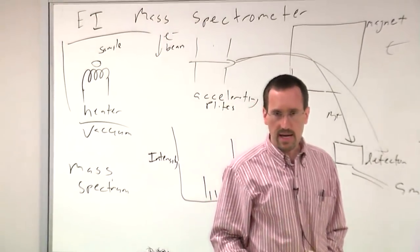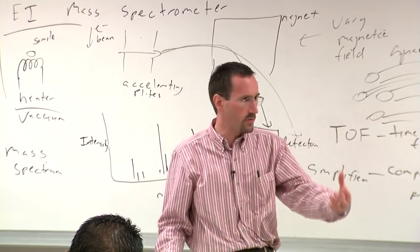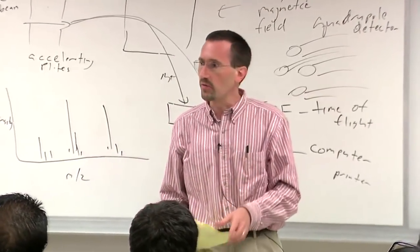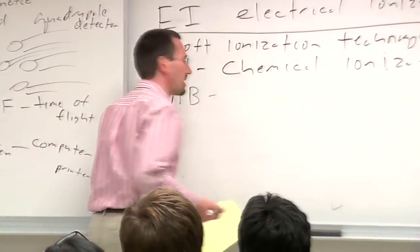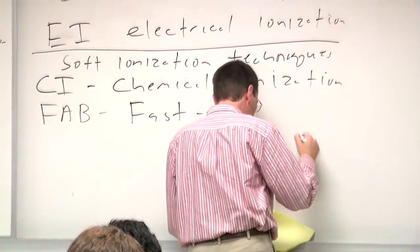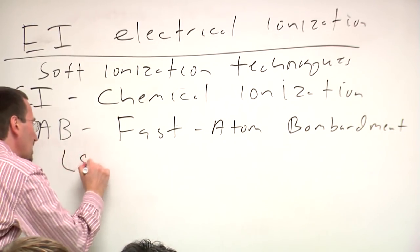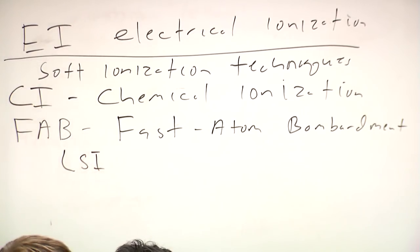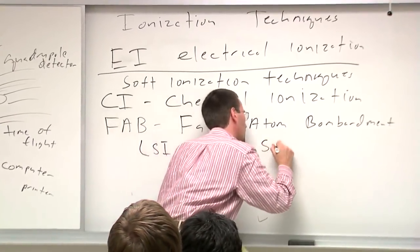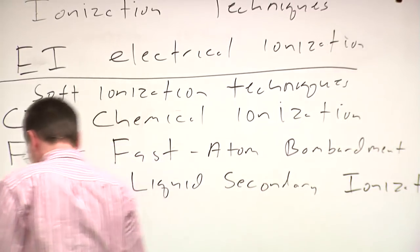One of the problems of both chemical ionization and electron ionization is getting the molecule into the gas phase. As organic and biomolecular chemists have become interested in bigger and bigger molecules — proteins, nucleic acids, oligosaccharides — ionization has become more important. Another technique developed is fast atom bombardment. There's also a variant called LSI: in one case you're doing the process with an atom, in the other with an ion.